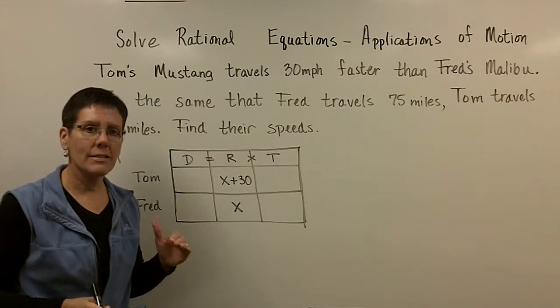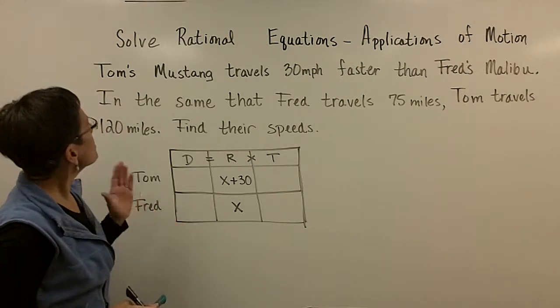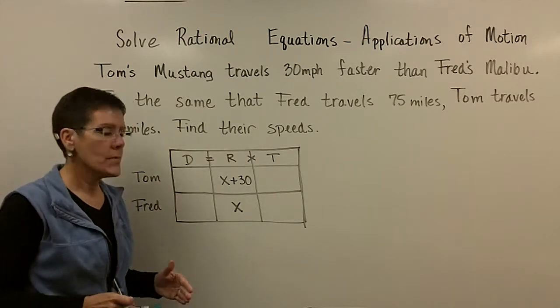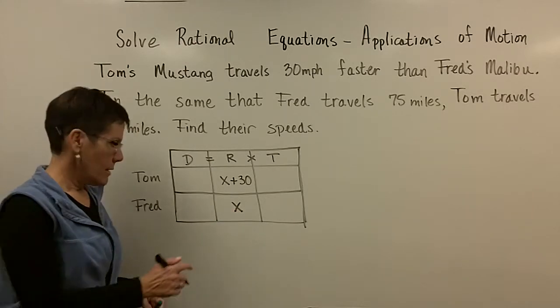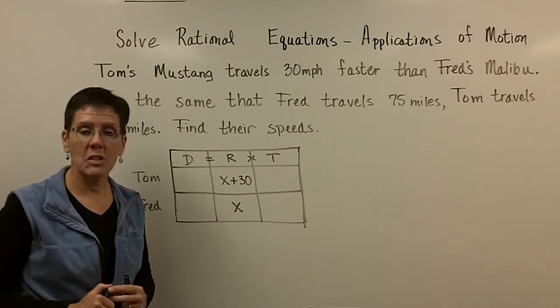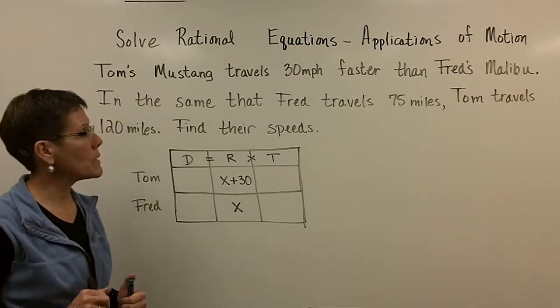So we've got to, since we're comparing Tom, whose Mustang travels faster to Fred's, let's let Fred's vehicle travel at a speed of x. And then Tom will be x plus 30.